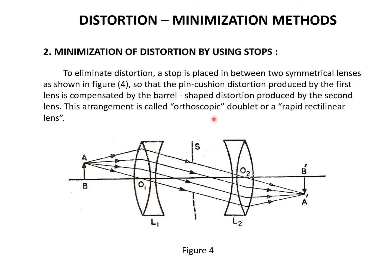By arranging the lenses like this, the pincushion distortion produced by the first lens is compensated by the barrel shaped distortion produced by the second lens. This arrangement is called an orthoscopic doublet or a rapid rectilinear lens. Since pincushion distortion is a positive distortion and barrel distortion is a negative distortion, by arranging the lenses in this manner, one can minimize the distortion. This arrangement is said to be an orthoscopic doublet or rapid rectilinear lens.